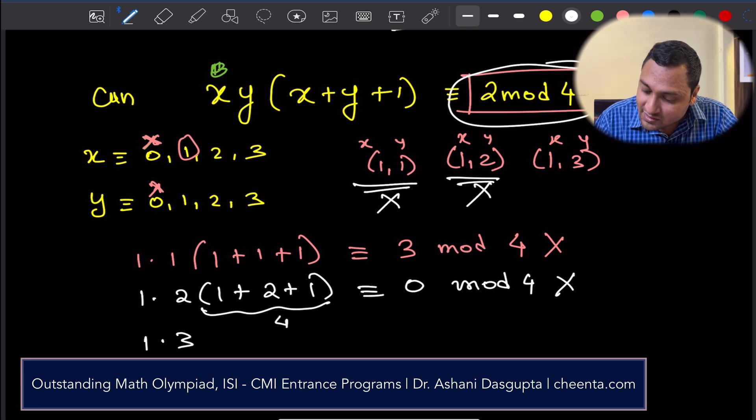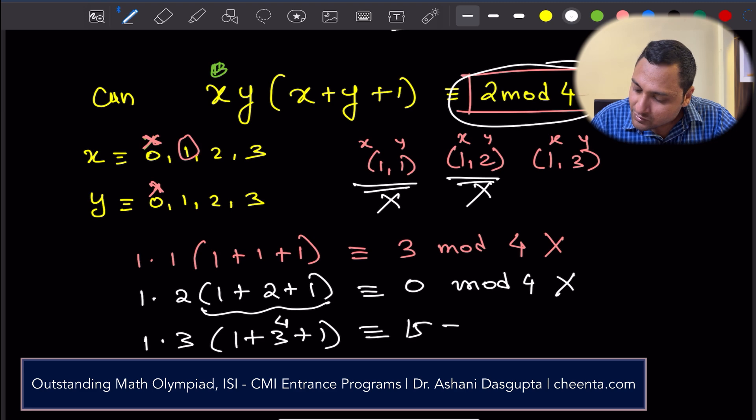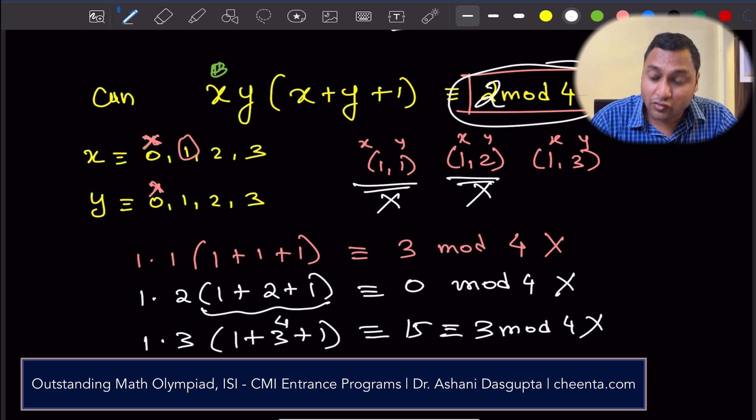(1,3): 1 times 3, 1 plus 3 plus 1. This is congruent to 15, which is congruent to 3 mod 4. Again, doesn't work. Has to be 2 mod 4. That's what we want. So, none of these 3 pairs work.